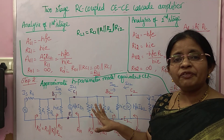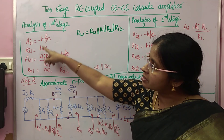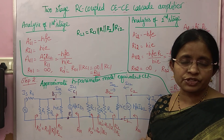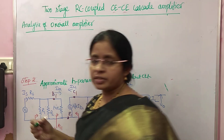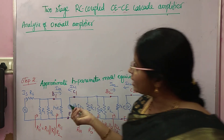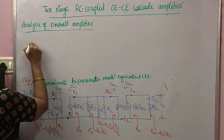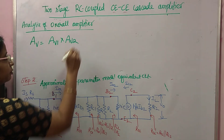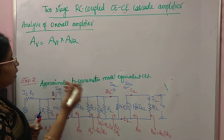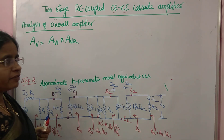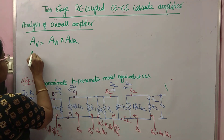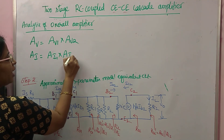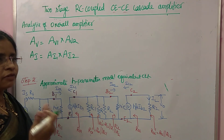For the overall amplifier we have to find all these things: current gain, input resistance, output resistance, and voltage gain. The overall voltage gain AV is equal to AV1 multiplied by AV2. We already know the values of AV1 and AV2 — simply substitute to get the overall voltage gain. The overall current gain AI is also AI1 into AI2 — the product of the two stages' current gains.